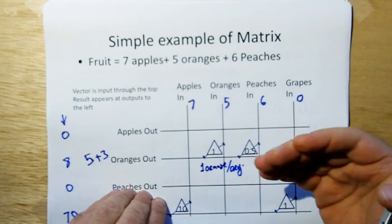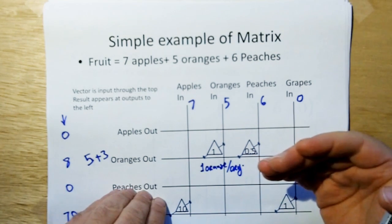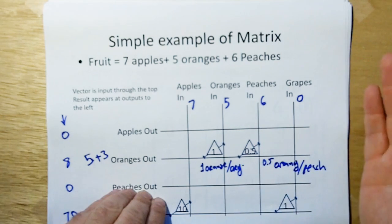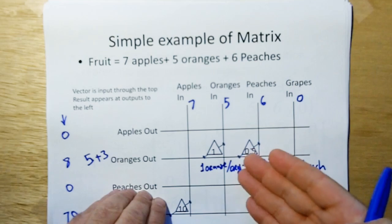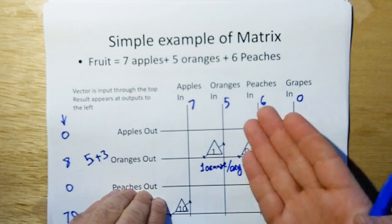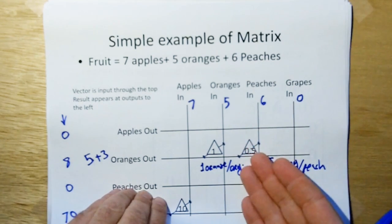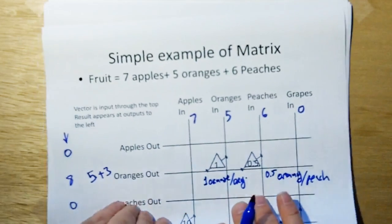The important thing to remember is the matrix elements are what I call trans dimensions. This guy here is not just one, it's one orange per orange in. This guy here is 0.5 oranges per peach. Whereas a vector has straight units, the matrix has trans dimensions, and that's the difference. Vectors have dimensions.